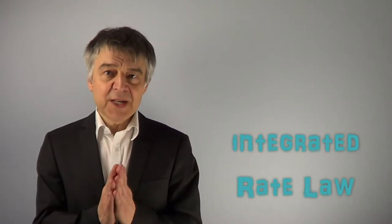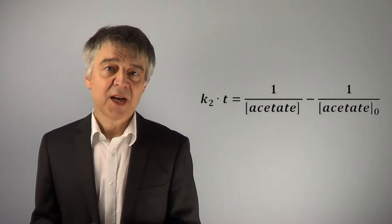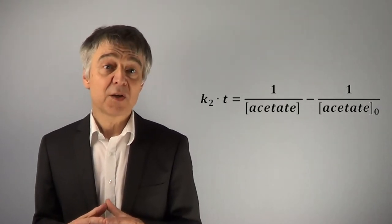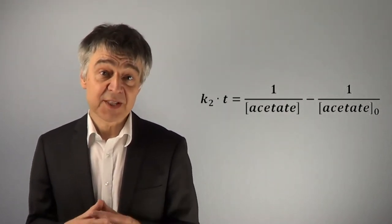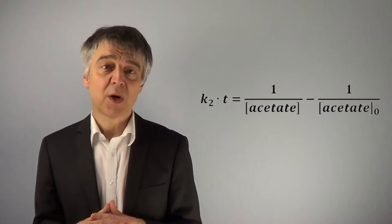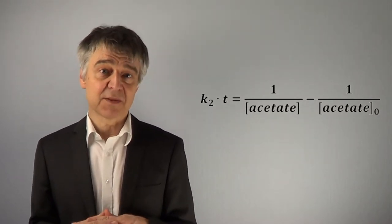The integrated rate law for a second-order reaction, run stoichiometrically, is K times T equals 1 over acetate concentration minus 1 over initial acetate concentration. Plugging in the numbers,